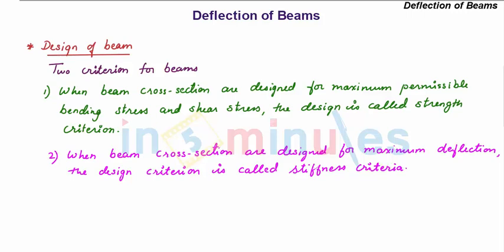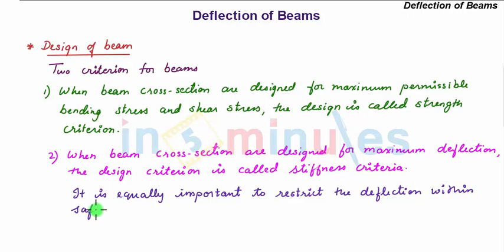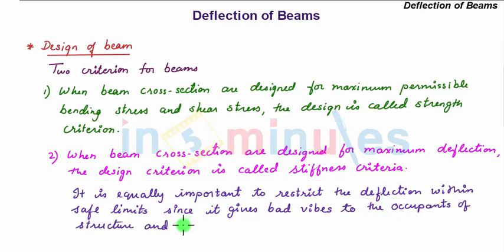So when we limit the deflection of beams within some permissible value our criteria is called stiffness criteria. As it is equally important to restrict the deflection within safe limits, since it gives bad vibes to the occupants of the structure and occupants feel unsafe.